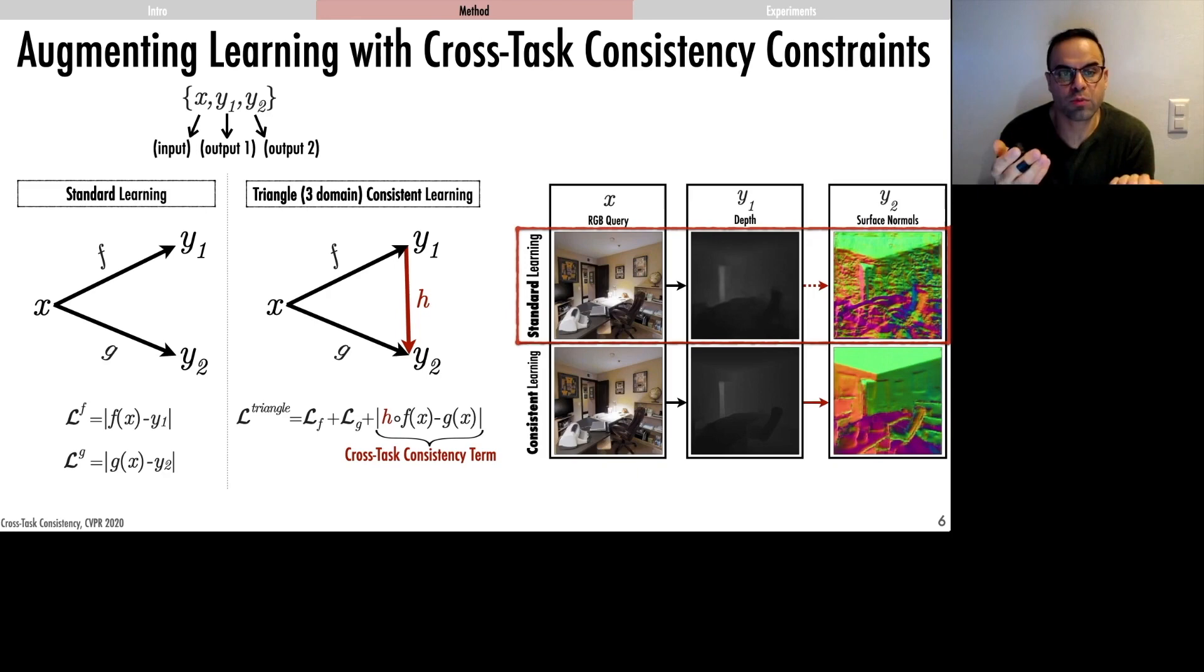While if you learn depth subject to consistency constraints with normals, not only the deduced normals look much better, but the depth prediction itself gets improved too. This is an intuitive and small-scale example. We extend this concept to any arbitrary pairs of tasks with obscure or unknown relationships.